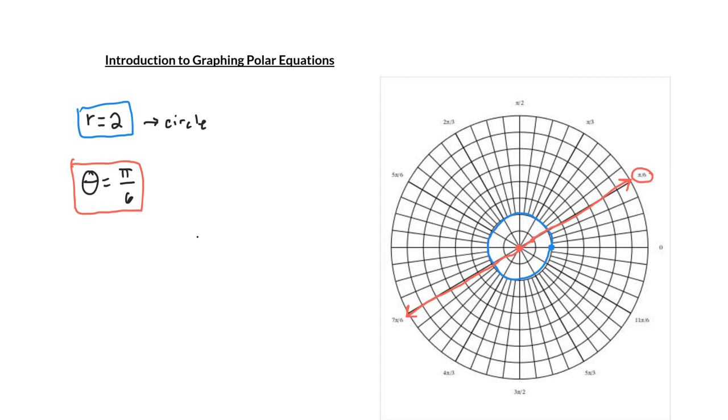And so that explains how to graph some very basic polar equations where we have only r or only theta. But what about polar equations where r and theta are both involved?